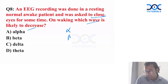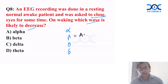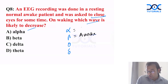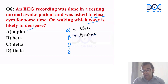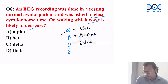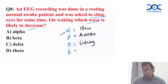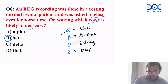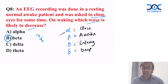Eighth question on EEG waves: when a person is 100% awake, beta waves are present. When you close your eyes, alpha waves appear. When entering deep sleep, theta waves are present for light sleep, and delta waves for deep sleep. The patient was asked to close their eyes, so beta waves would be present while awake. Overall, out of eight questions, you should have gotten a minimum of seven correct answers. Best of luck — thank you so much.